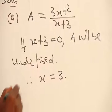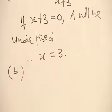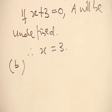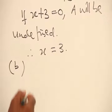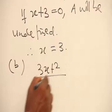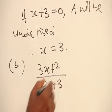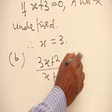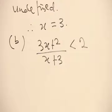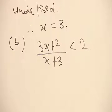Part B: For what range of values of s is A less than 2? This is an inequality. A is 3s plus 2 all over s plus 3, and it is less than 2. So to solve this problem...